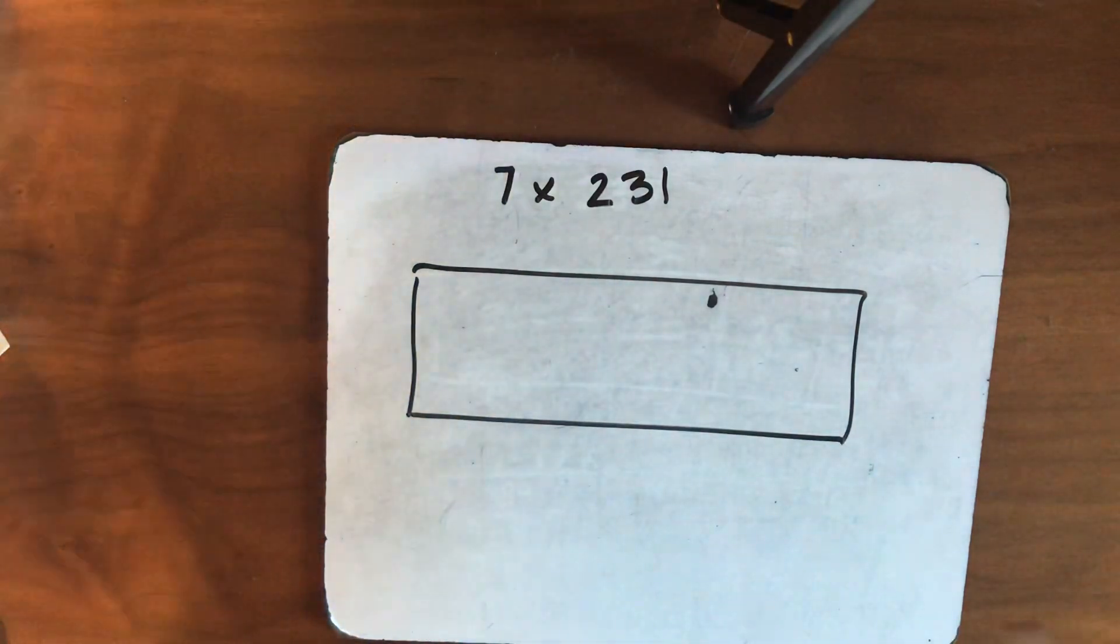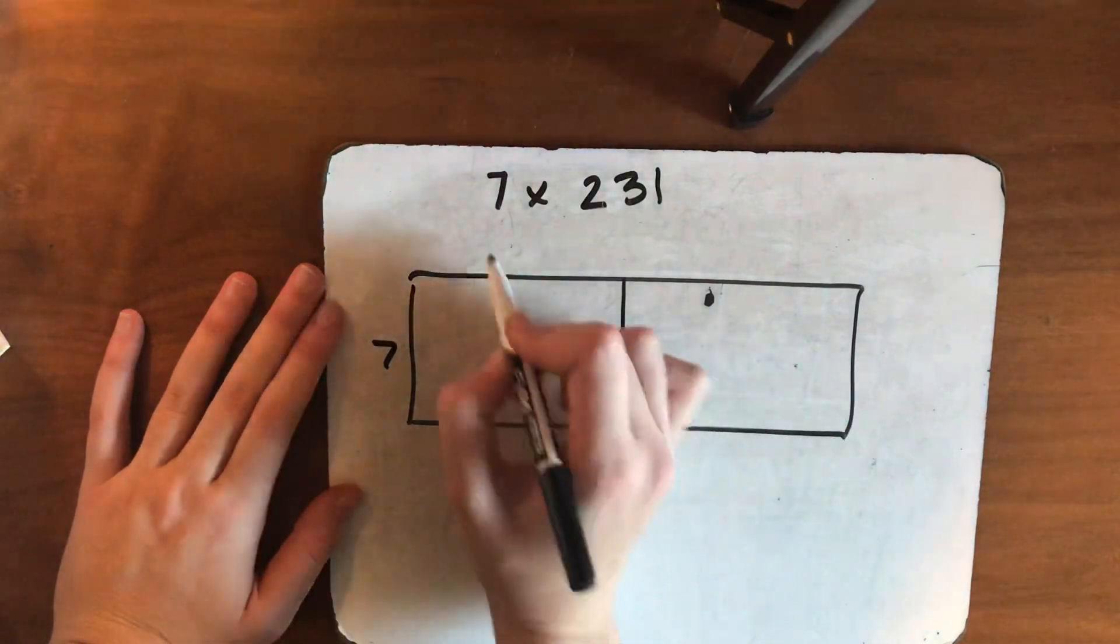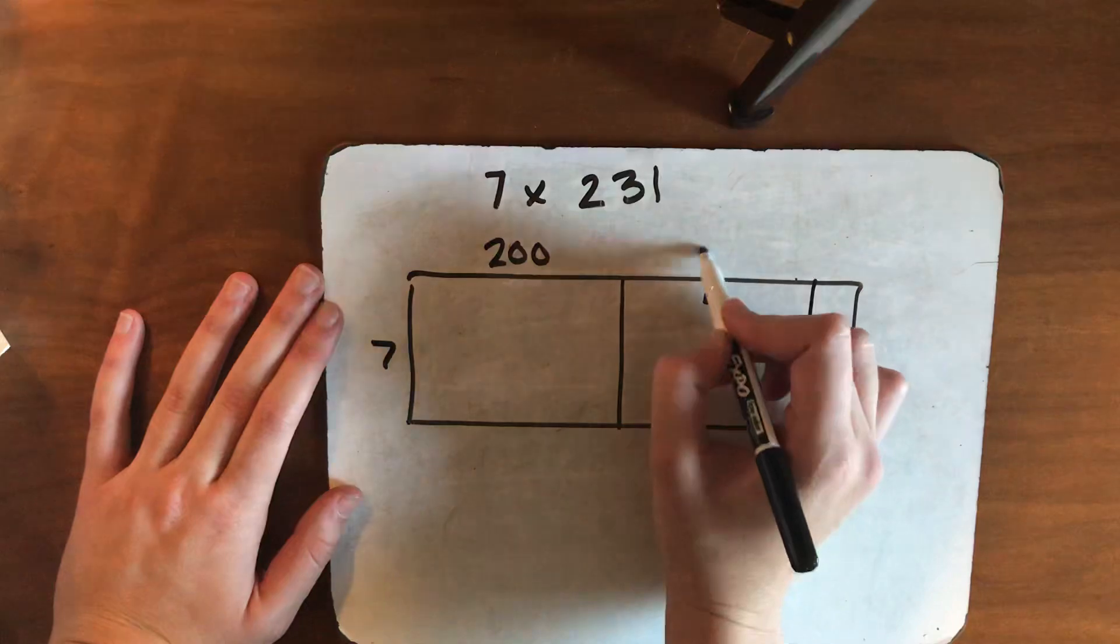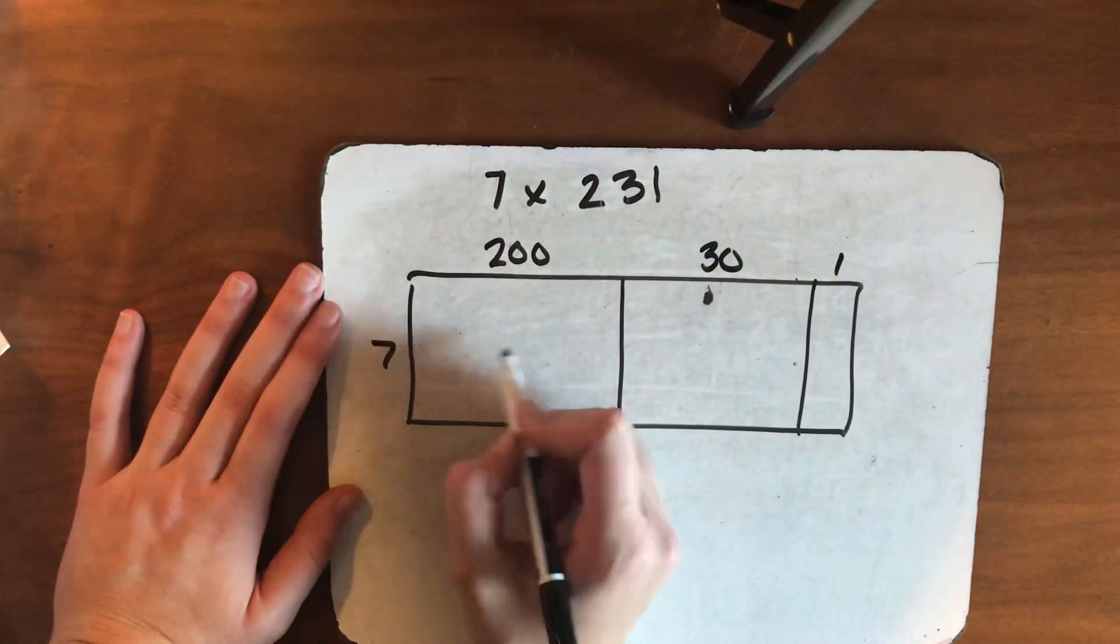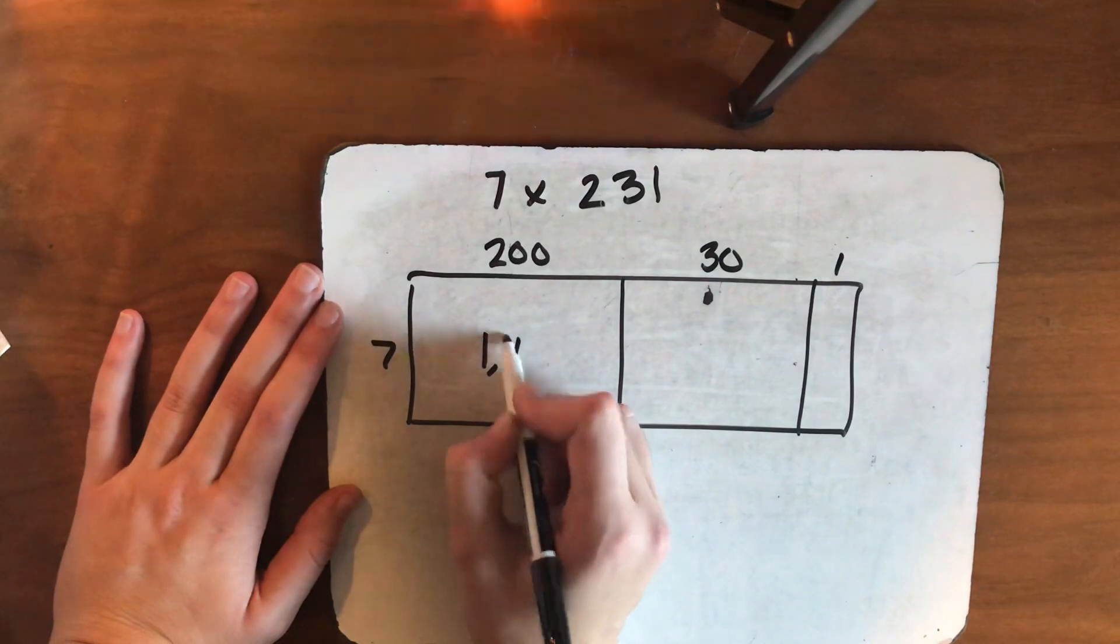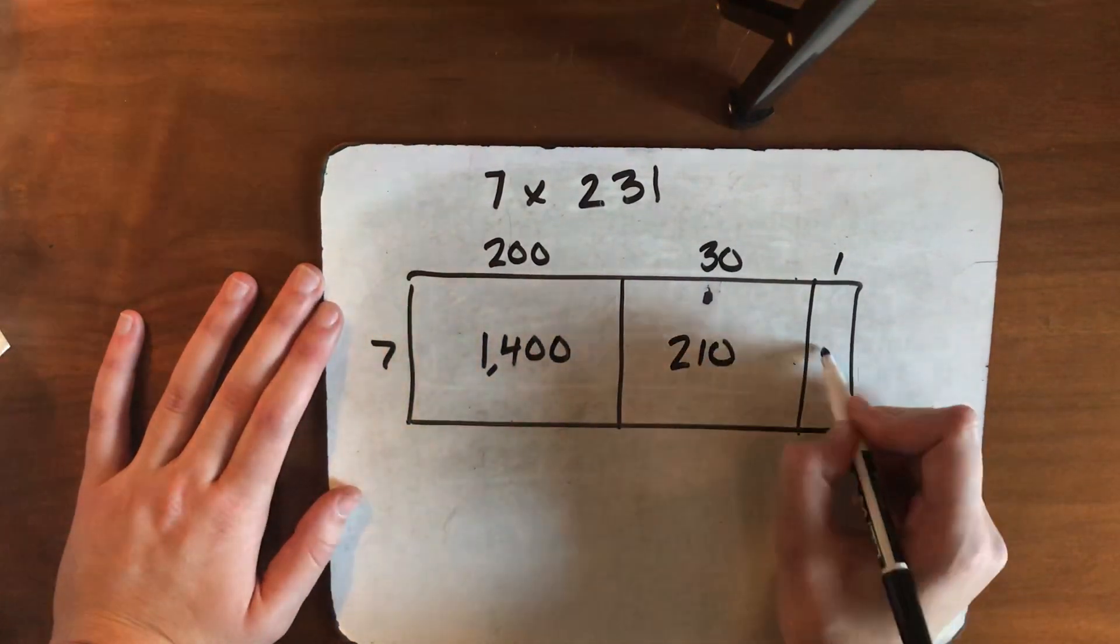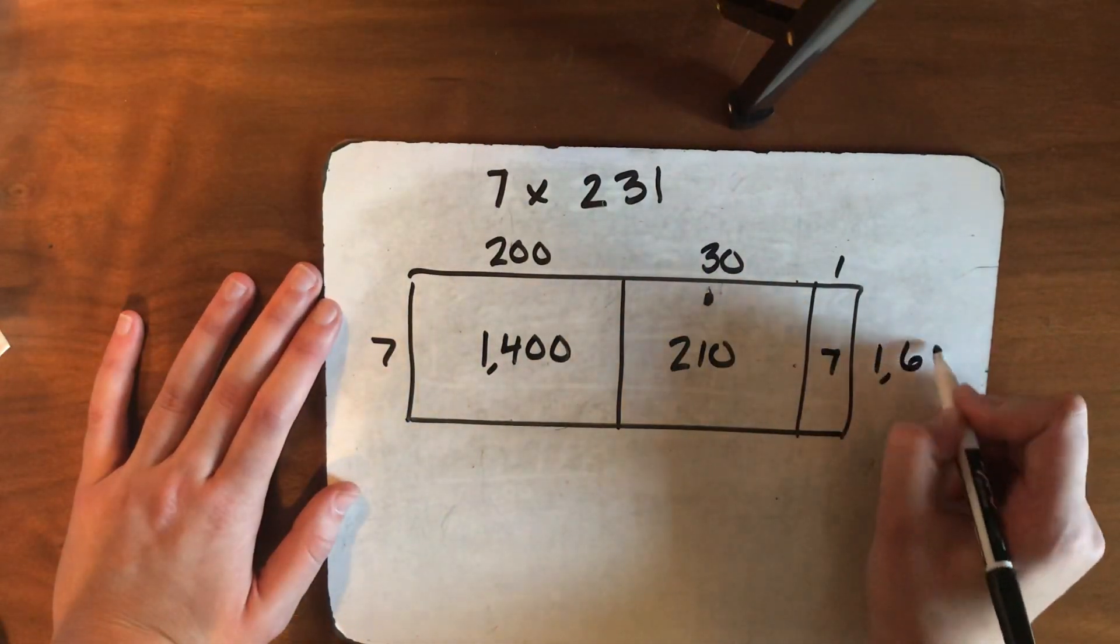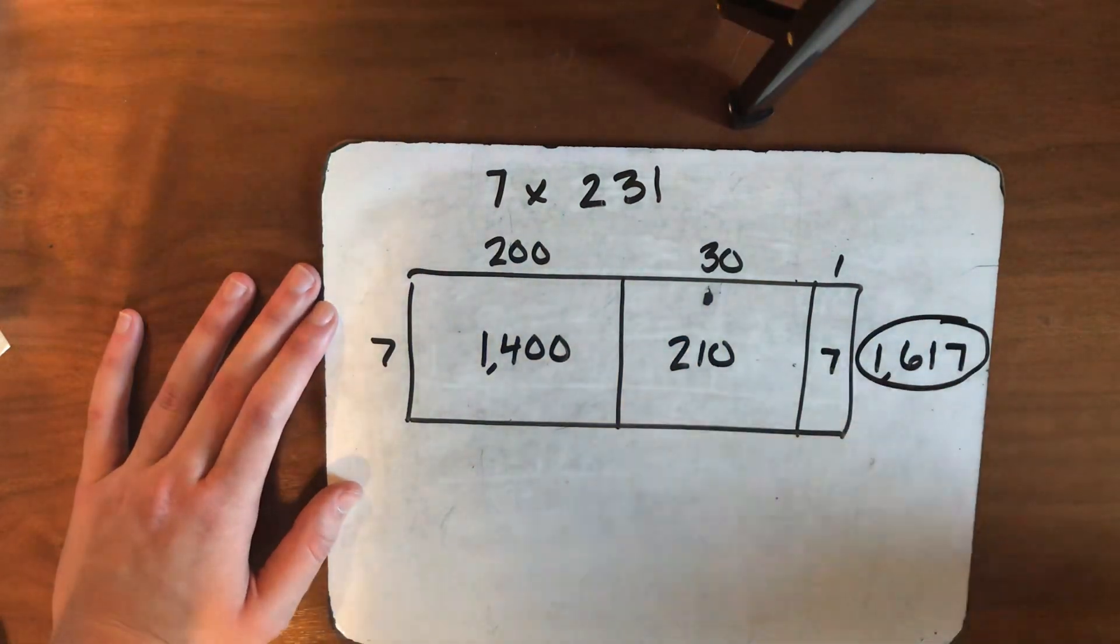All right, to check your work, I'm going to put my 7 over here. My 2 is worth 200. My 3 is worth 30. And my 1. 200 times 7 is 1,400. 7 times 30 is 210 and 7. Add them up. 1,617. Boom, shaka-laka.